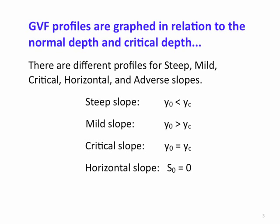Horizontal slopes don't have a normal depth. You can confirm that by looking at the Chezy-Manning equation for normal flow. Horizontal slopes are where S₀, our bottom slope, is exactly 0. We can also have adverse slopes where S₀ is less than 0 — that is, the channel bottom actually slopes uphill in the direction of flow. Again, there can be no normal depth under a condition like this.